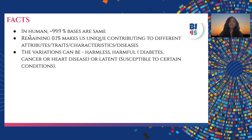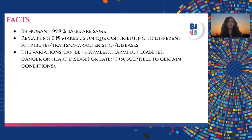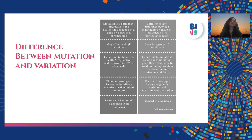In humans, approximately 99.9% of bases are the same; the remaining 0.1% makes us unique and contributes to our traits, characteristics, and diseases. This 0.1% variation can be harmless, harmful — for example causing diabetes, cancer, or heart disease — or latent, such as susceptibility to allergic syndromes. Regarding the difference between mutation and variation: a mutation is a permanent alteration in the nucleotide sequence of a gene or part of a chromosome, while variation is a difference between individuals or groups of a particular species.